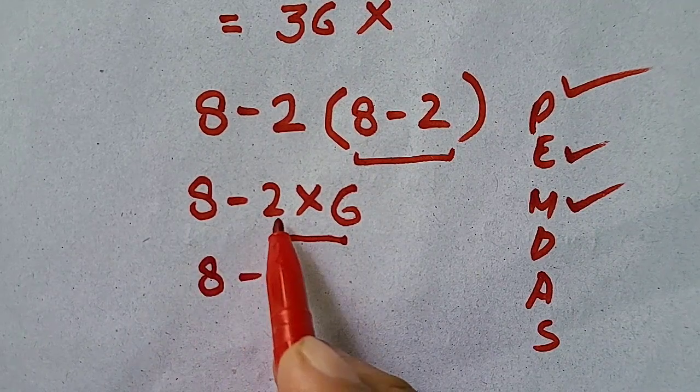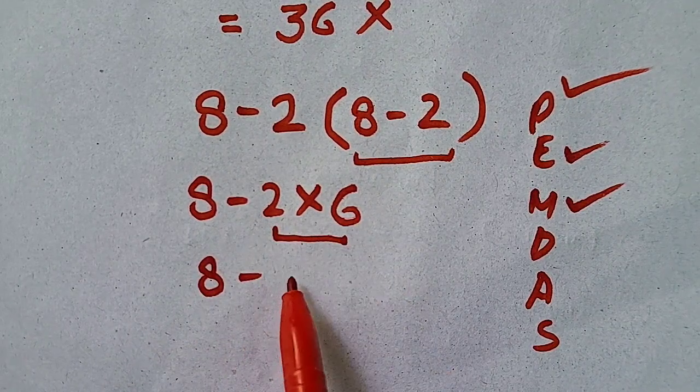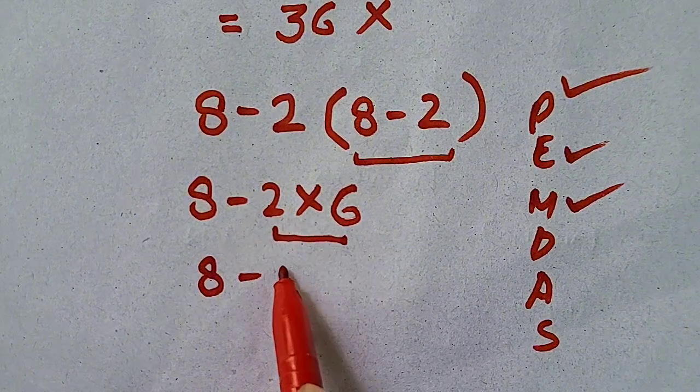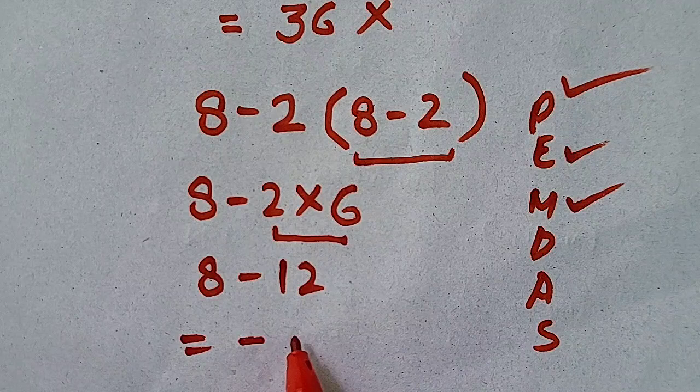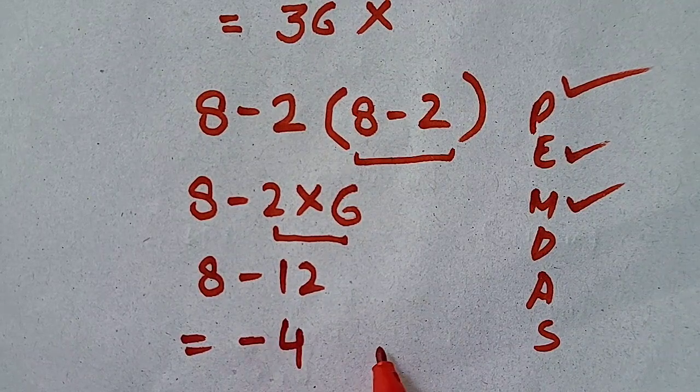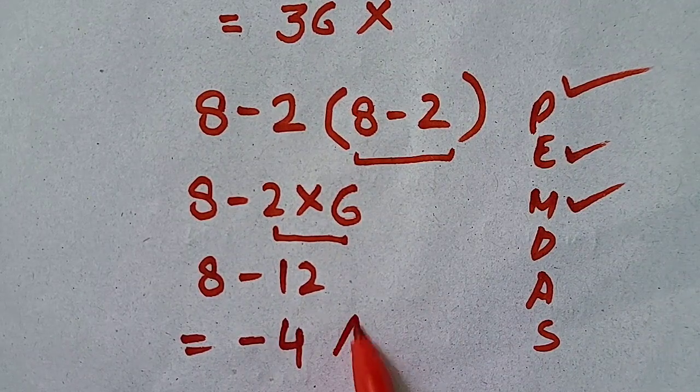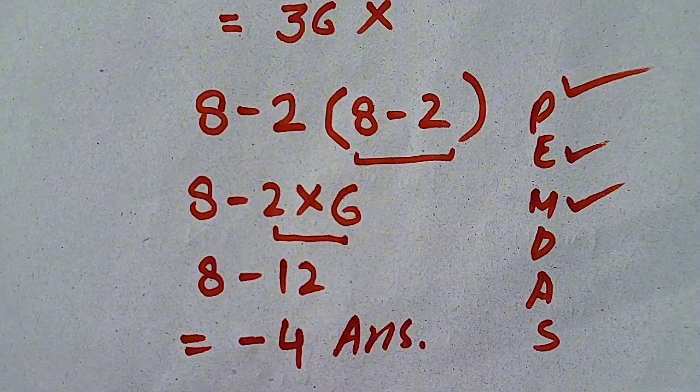8 minus 2 times 6 will be equal to 8 minus 12. So 8 minus 12 will be equal to minus 4. Hence, minus 4 will be our answer.